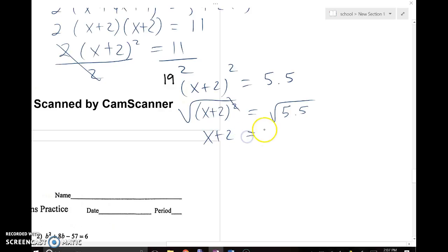At 5.5, you're probably going to want to use your calculator there. The square root of 5.5 would be 2.35 if we round it to two decimal places. So subtract 2 from both sides. That will help you to solve. So x is equal to negative 2 plus or minus 2.35.